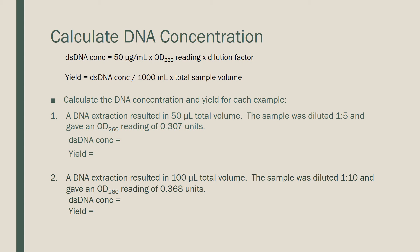For sample 1, we have a DNA extraction that gave us a total volume of 50 microliters. The sample was diluted 1 to 5 and gave us an OD260 reading of 0.307. To determine the concentration, we multiply 50 times 0.307 times 5, which is our dilution factor. This gives us 76.75 micrograms per milliliter. Now we take that concentration, 76.75, divide by 1000, and multiply by 50, our total sample volume, which gives us a yield of 3.8 micrograms of DNA.